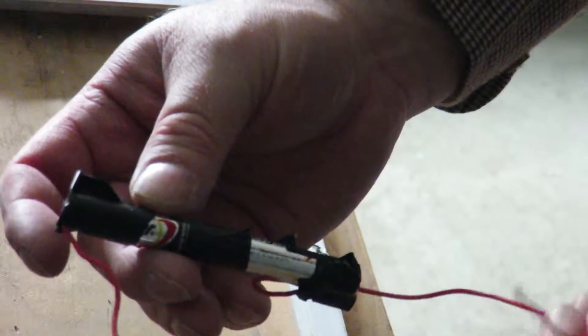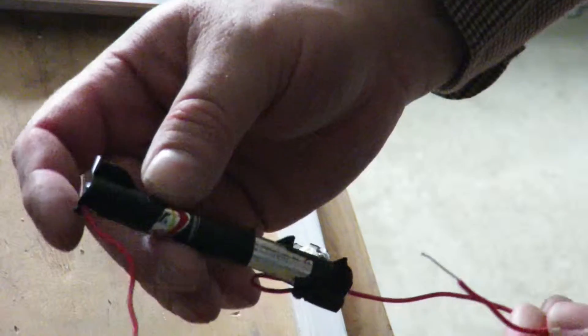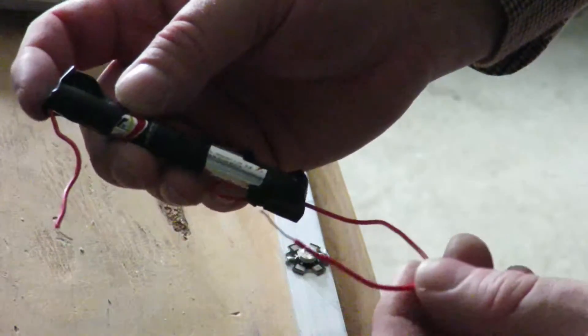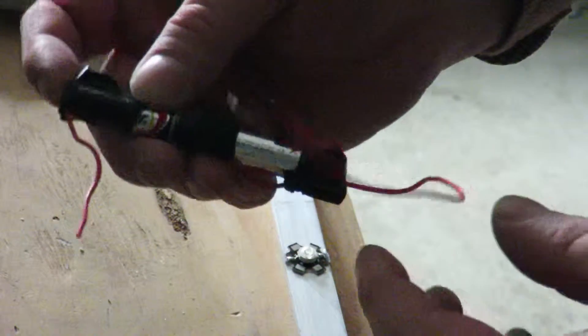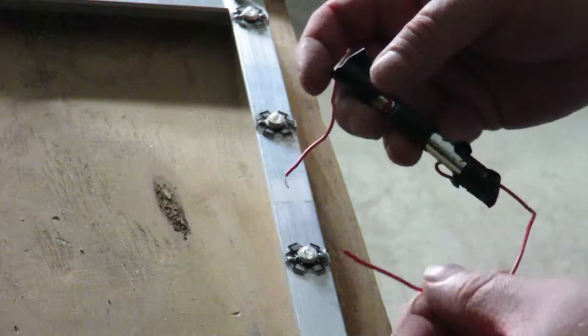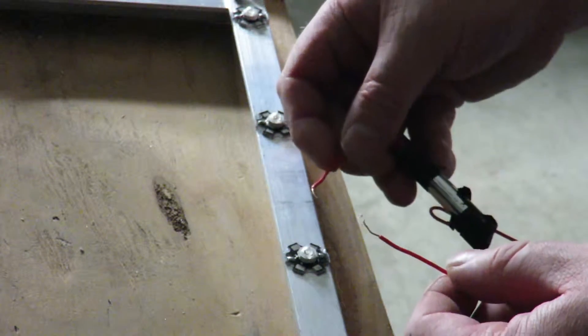But what I did was I just taped two AAAs together, and I got two wires here, this is my negative and this is my positive, and we're just going to hook it up to these LEDs and see what happens here.